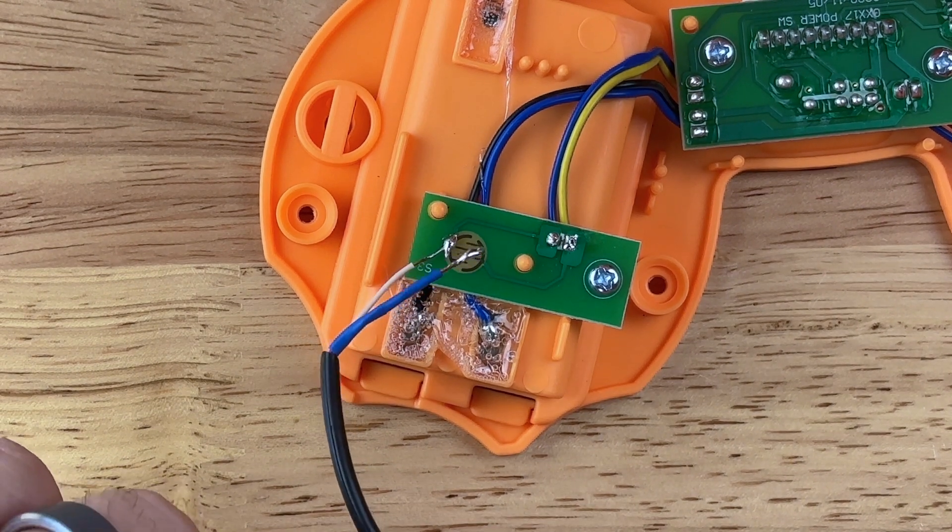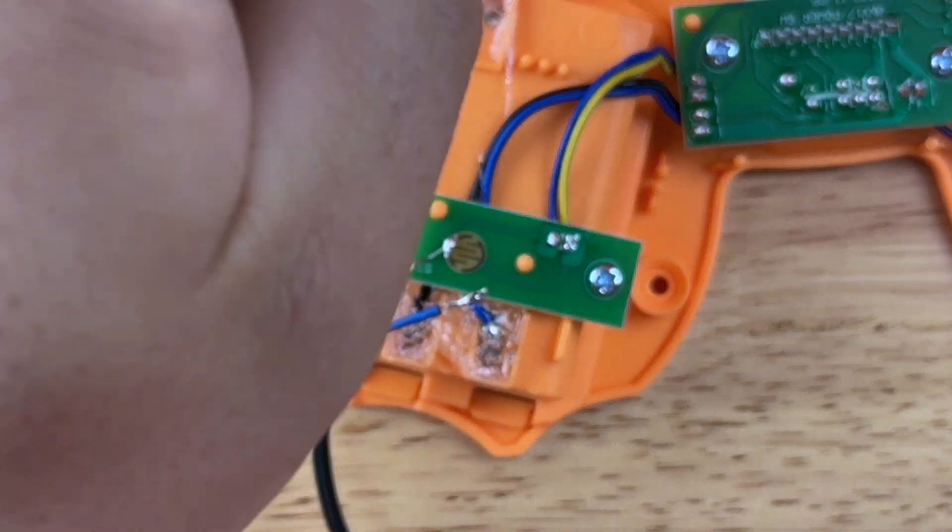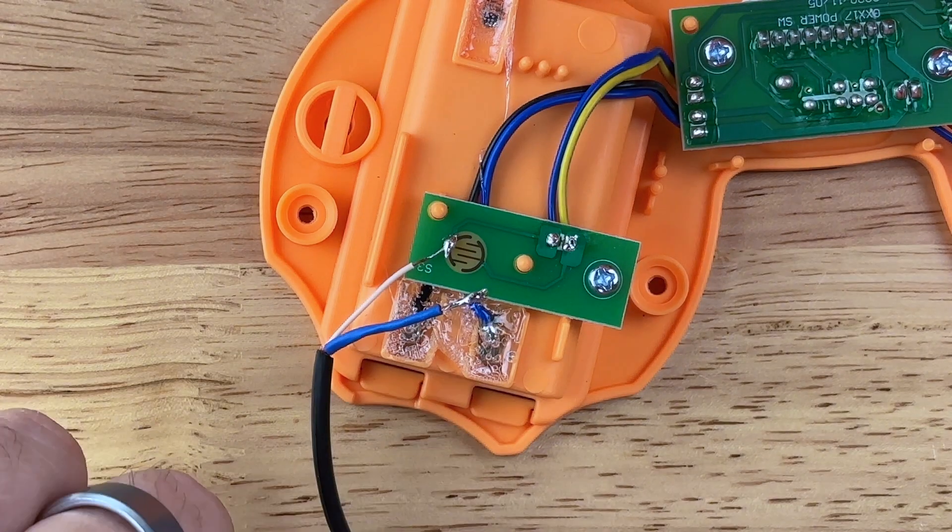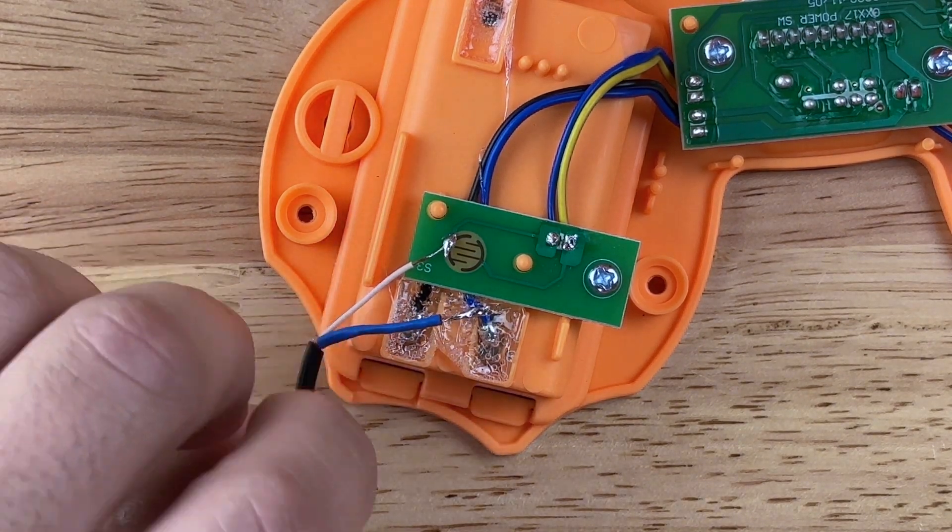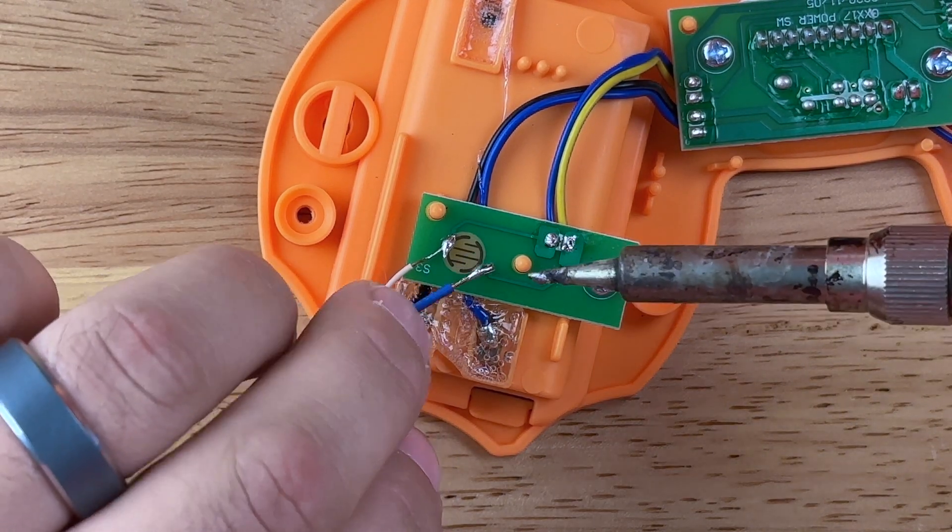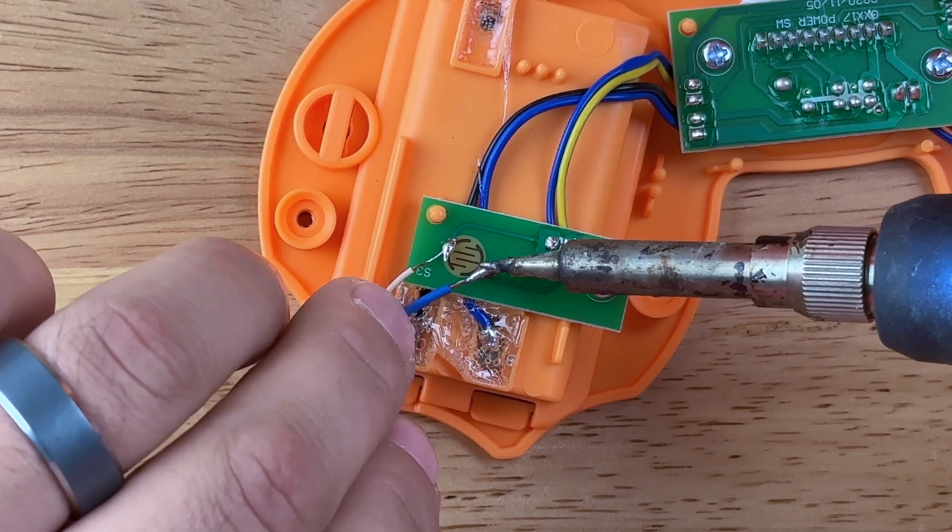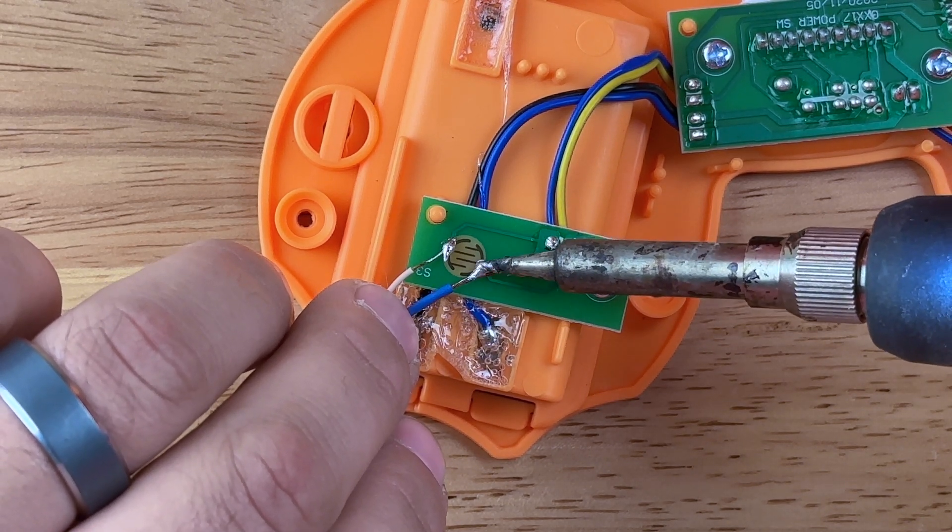Another thing I need to mention is I'm not actually adapting this toy, so I did not run my headphone jack wire through my toy yet. Before you solder, you need to make sure that you've drilled a hole through the toy and you've run your wire through there. Otherwise you can't do it after the fact, so make sure you do it before you solder.